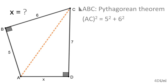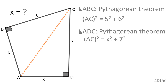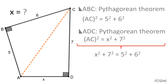Once we draw segment AC, applying the Pythagorean theorem in the right triangle ABC, we have that AC² = 5² + 6². Applying the same theorem in the right triangle ADC, we get that AC² = 7² + X². From both relations, we get that X² + 7² = 5² + 6². Solving for X, we obtain the answer: X = 2√3.